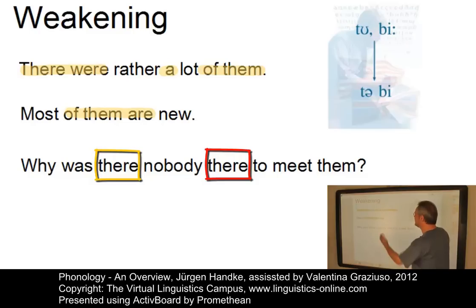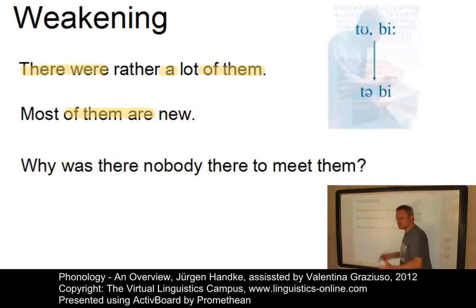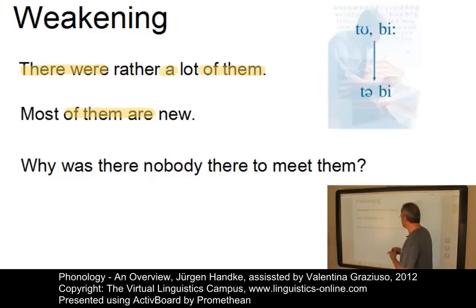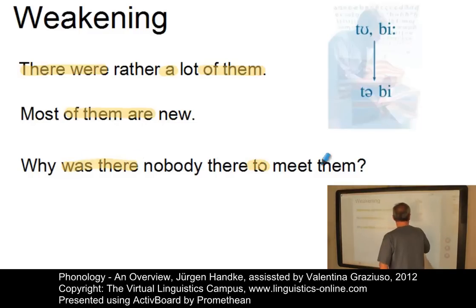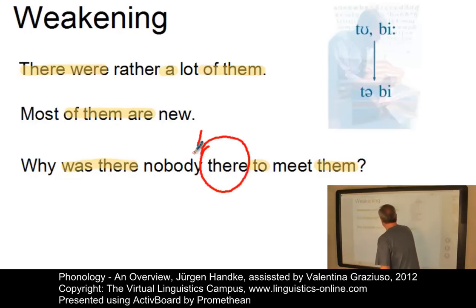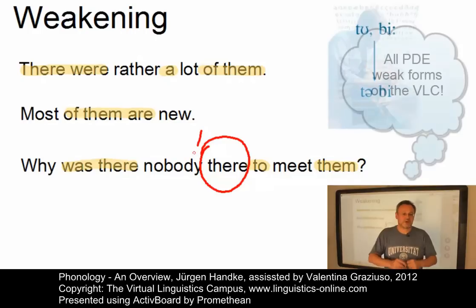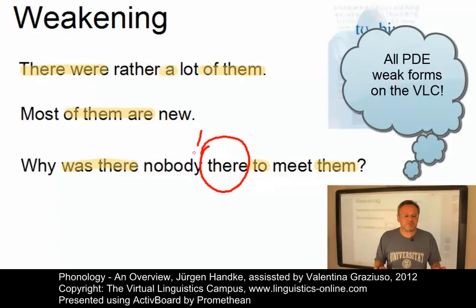Let's first read out the words as if they occurred in isolation: 'Why was there nobody there to meet them?' And in conversational English: 'why was there nobody there to meet them?' Immediately you see that we have four weak forms and one strong form because the second 'there' is fully stressed. You get the contrast: 'why was there nobody THERE to meet them?' Consult the Virtual Linguistics Campus for a complete list of potential weak forms in British and American English.